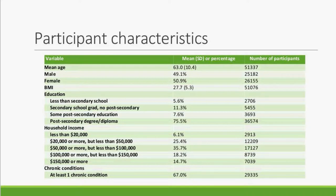In terms of participant characteristics: the mean age is about 63, reflecting the 45–85 year old recruitment range. It's roughly 50/50 males and females. Mean BMI is 27.7, just in the overweight category. We have a relatively educated population — 75.5% have a post-secondary degree or diploma — and relatively high income participants with a skew towards higher income categories. At least 67% of participants had at least one chronic condition.